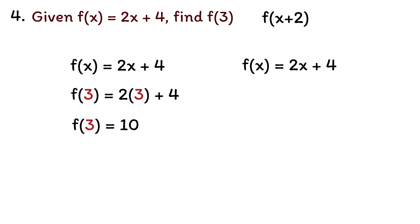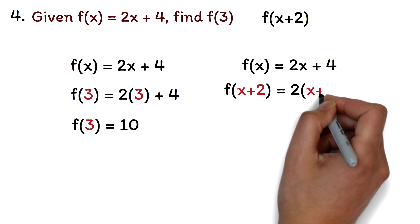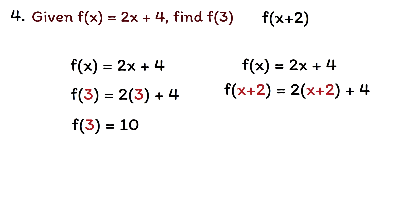We have f of x plus 2 equals 2 times x plus 2 plus 4. We can distribute the 2. 2 times x is 2x, and 2 times 2 is 4.